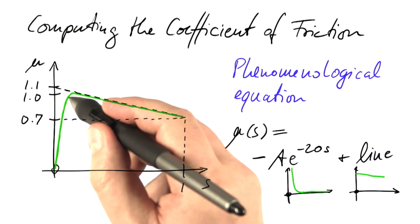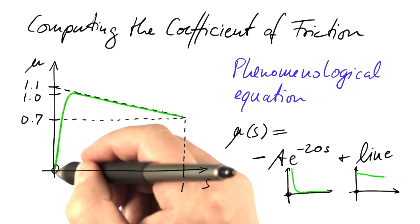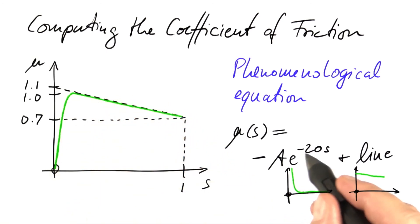And close to zero, it looks as though we are subtracting a quickly decaying function, such as e to the minus 20s. Your job is now to make this work. Pick the right value for the constant a and then implement this function in Python.